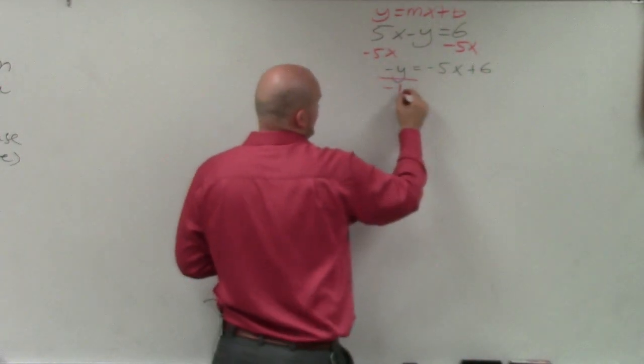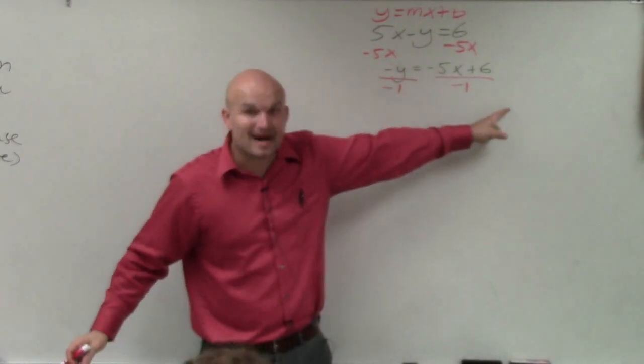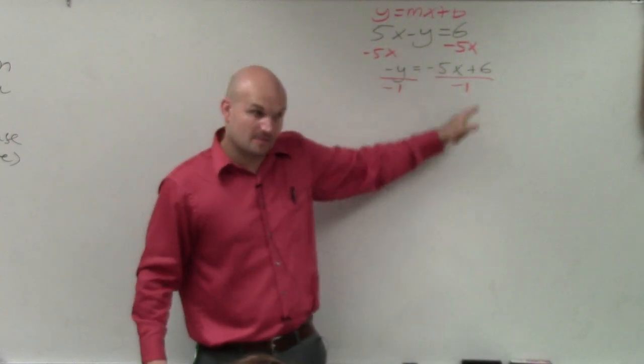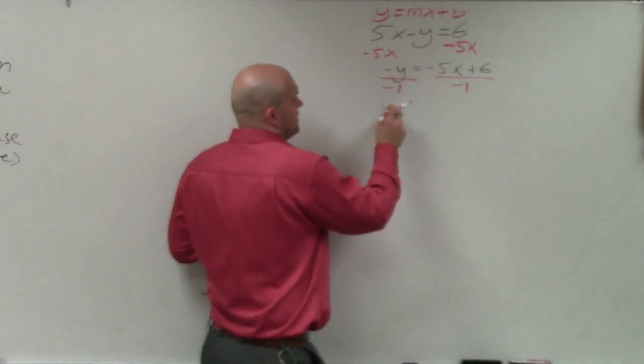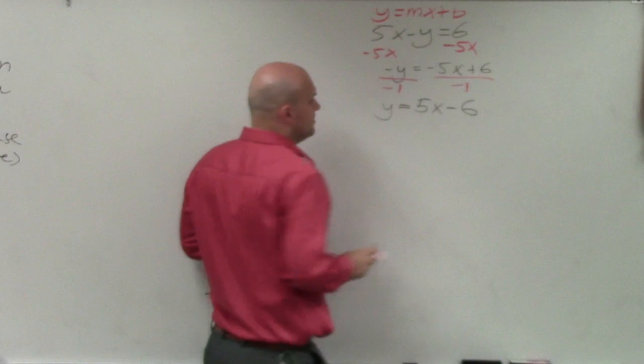Then I'll divide by negative 1. Remember, when you're dividing a quantity by a number, you've got to divide that number into both of them. So therefore, I have positive y equals positive 5x minus 6.